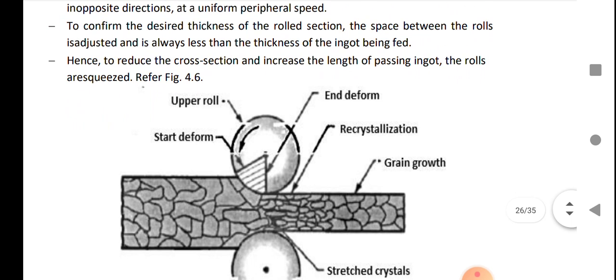To confirm the desired thickness of rolled section, the space between the rolls is adjusted. In this operation, we have to reduce the thickness. The difference between the rolls can be set according to requirements.